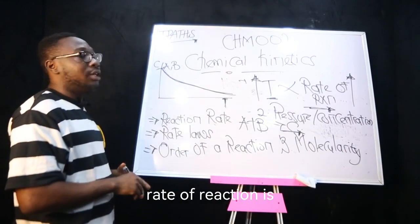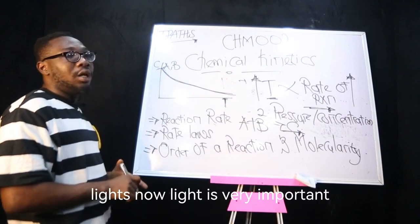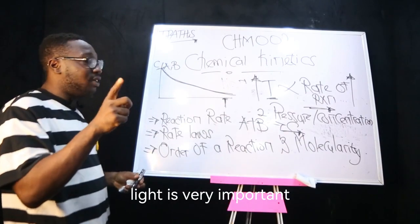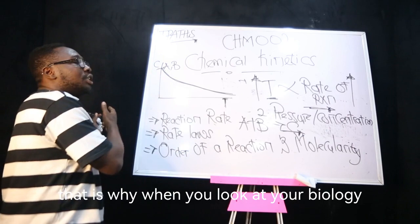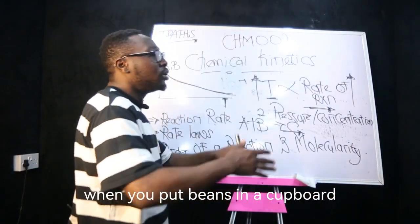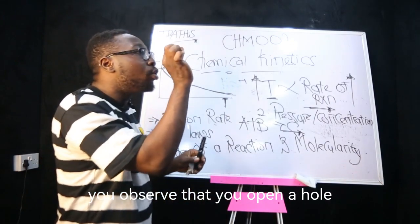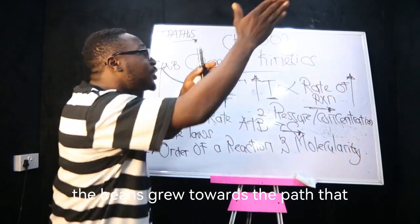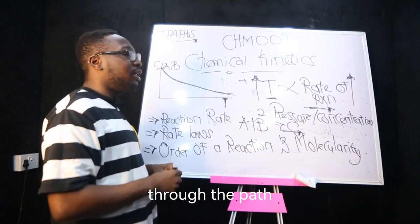Another factor of reaction rate is light. Light is very important. That's why from your biology, you remember that when you put beans in a cupboard and close the environment, when you open it you observe the beans grow towards the part that there's light.